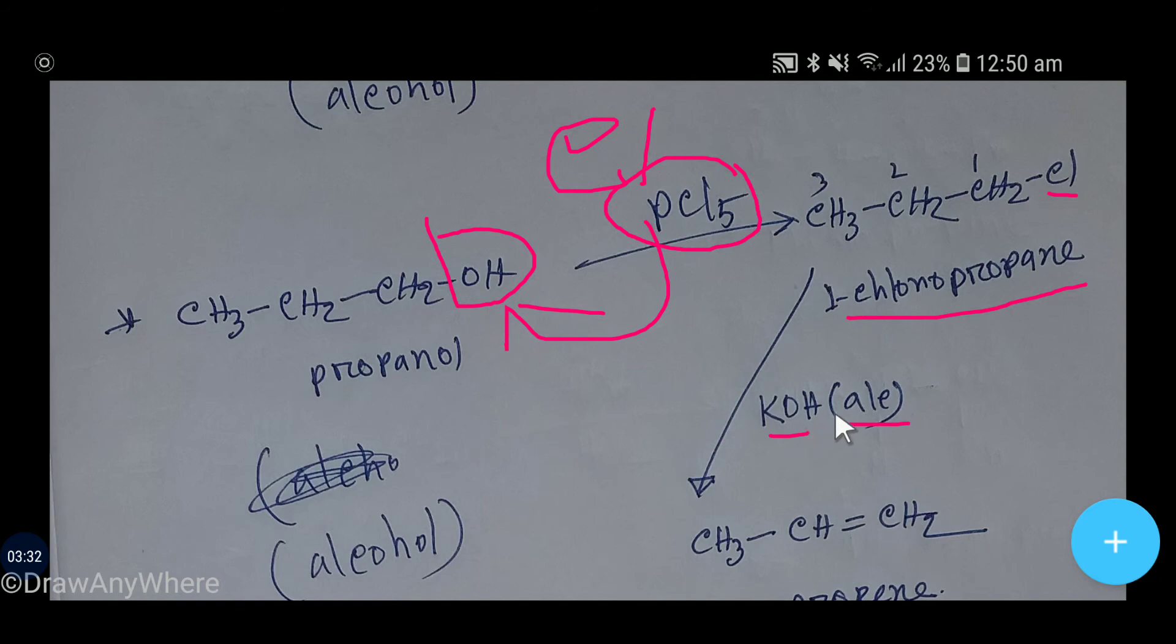Now if you add alcoholic potassium hydroxide - remember, this is not aqueous, this is alcoholic - then this chlorine will take hydrogen from the adjacent carbon, so here a double bond will be formed. HCl will be released, so you are getting propene.